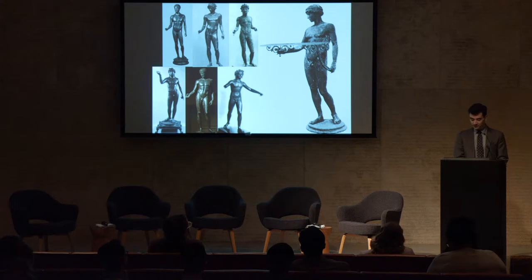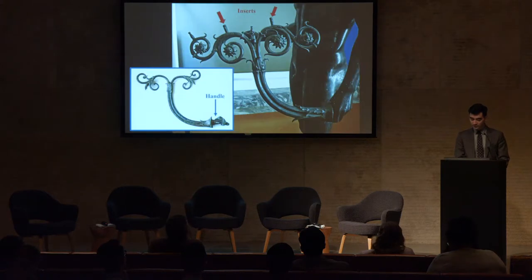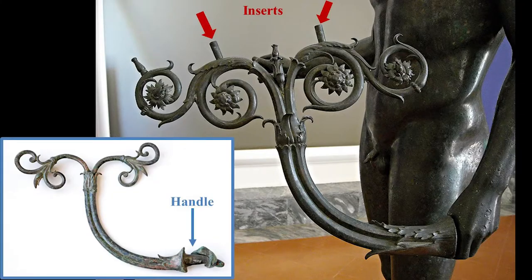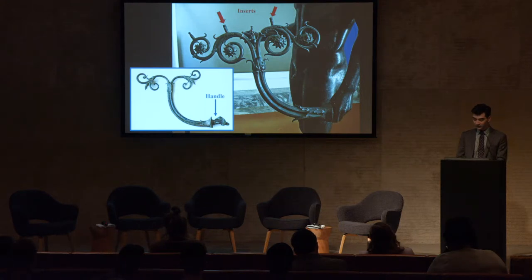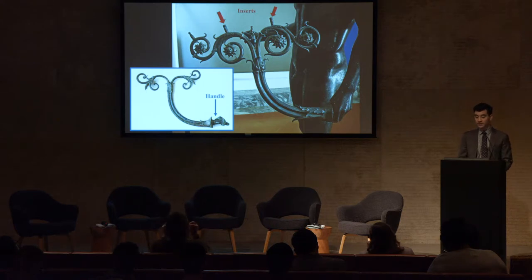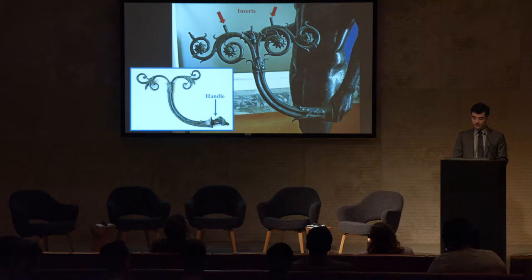What have survived are the bronze frames atop which the trays rested. These were usually cast in the form of stylized acanthus stalks or grapevines, and they terminated in a handle, like the one marked here by a blue arrow, which fitted into the statue's hand. The red arrows indicate the inserts that are present on the tops of some of the frames. Presumably, these would have fitted into corresponding holes in the bottom of a wooden tray, securing it in place.